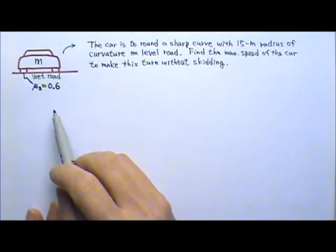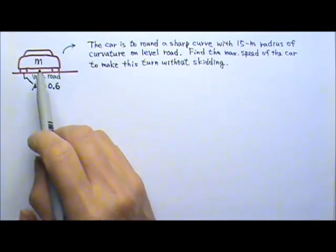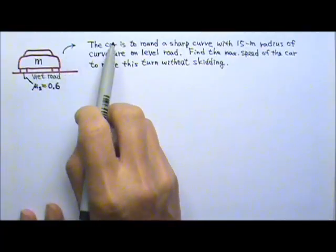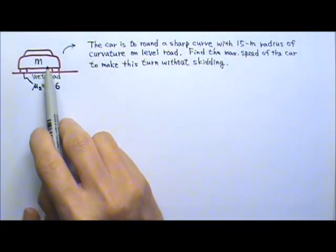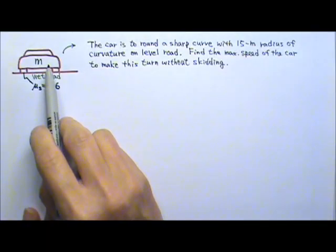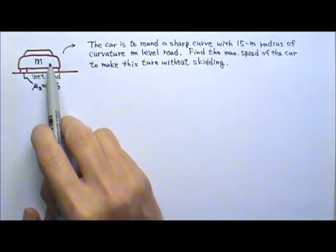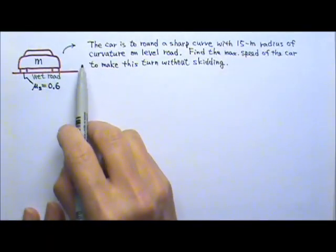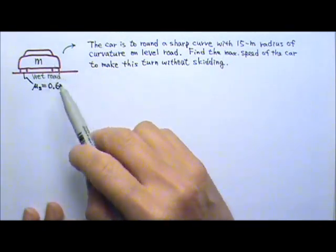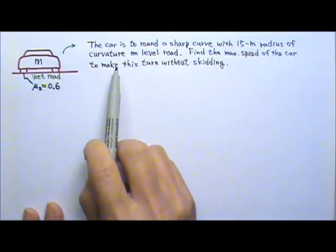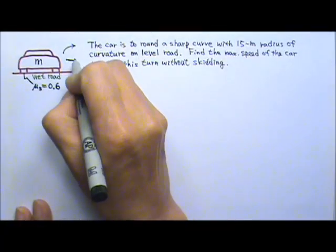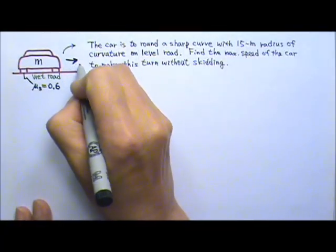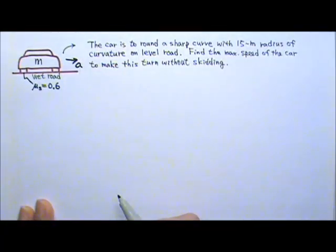Let's follow the problem-solving procedures. The car is making a circular turn to the right. Since it is doing circular motion, its acceleration is towards the center. And for this car making the circular turn, the center is to the right. So the acceleration goes to the right — that's the centripetal acceleration towards the center.